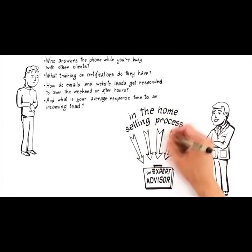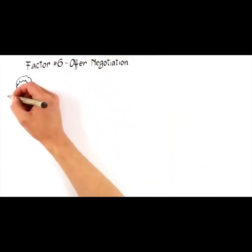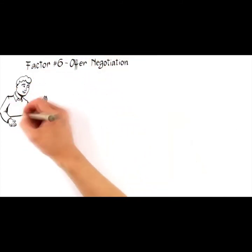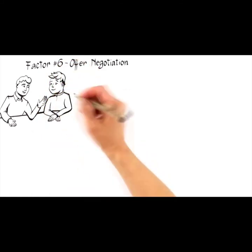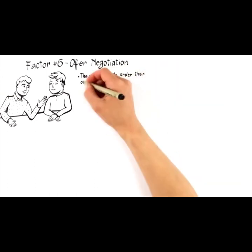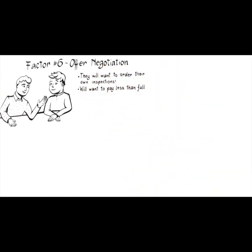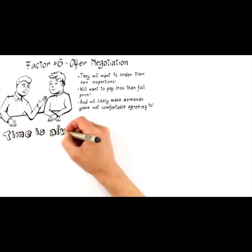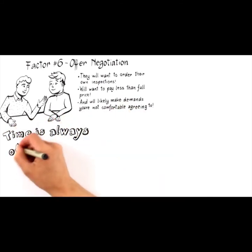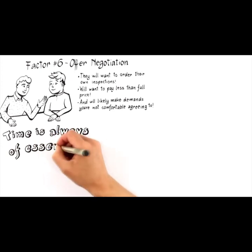The next-to-last factor that influences the likelihood you get top-dollar for your home is factor number six, offer negotiation. Regardless of how well a home is positioned to attract the perfect buyer, they will want to order their own inspections, will want to pay less than full price, and will likely make demands you're not comfortable agreeing to. Therefore, not enough can be said about hiring an expert who can negotiate an outcome that serves your best interests.